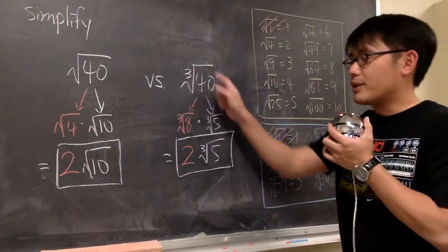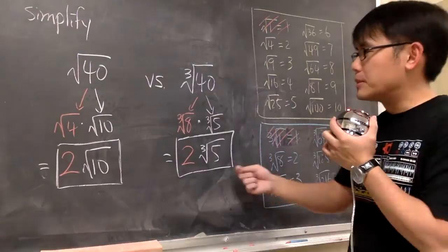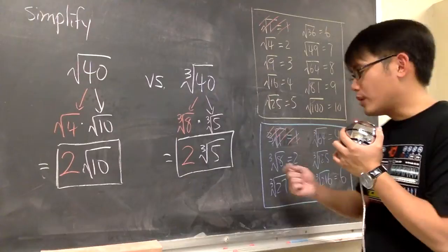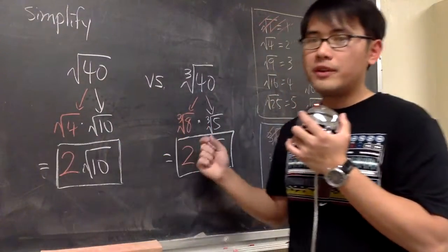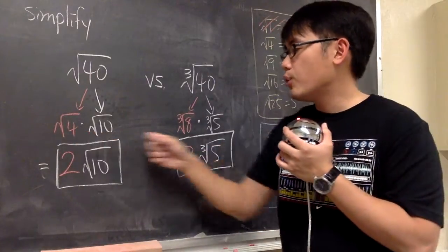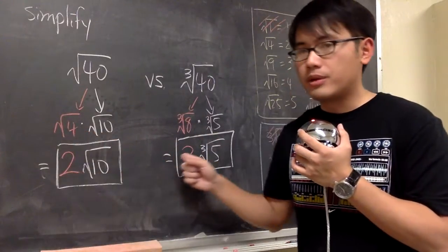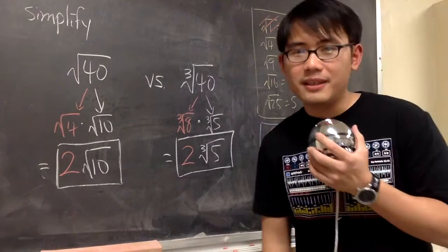And then likewise, when you have the cube root, you ask yourself, what times what will give you the number inside, and one of the numbers should be from here. And put down the perfect square, or the perfect cube first, because they will give you the nice number right away. This is the idea. That's it.